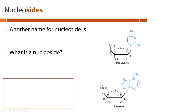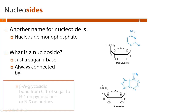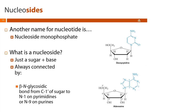Another name for a nucleotide is a nucleoside monophosphate. A nucleoside is just the base and the sugar connected together. They are always connected by what we call a beta-N-glycosidic bond. From our carbohydrates module, glycosidic bonds are acetal linkages. An N-glycoside is similar but adds a hemiacetal from a cyclic monosaccharide to an amine from our nitrogenous base.